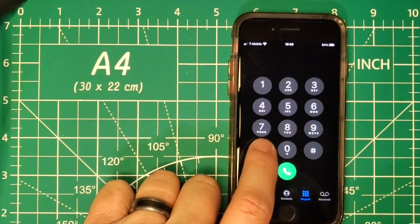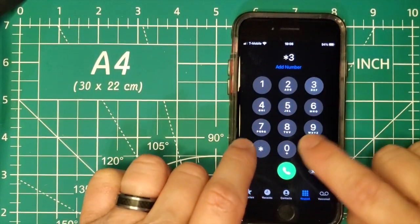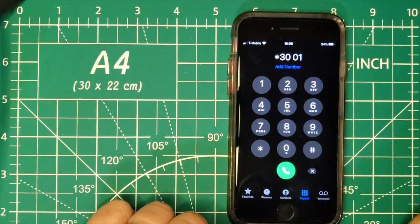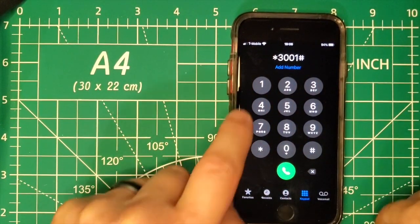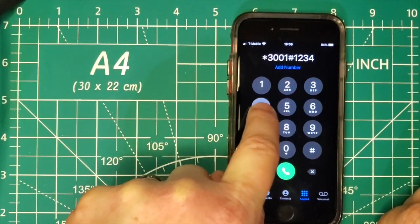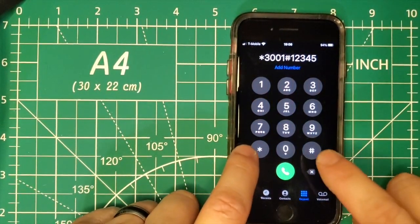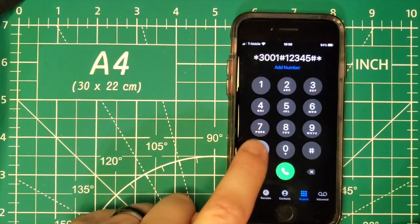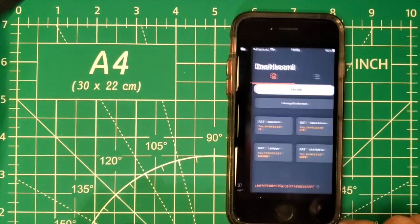to type in the following: star 3001 pound 12345 pound star. Then we'll click the call button.